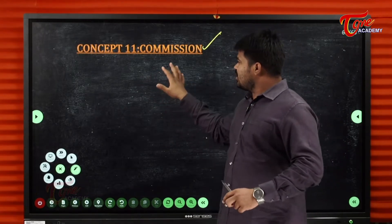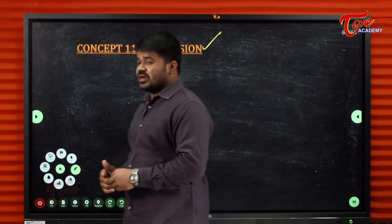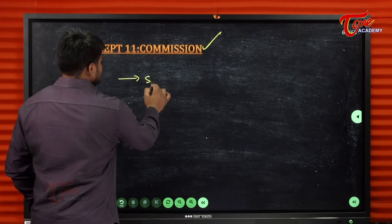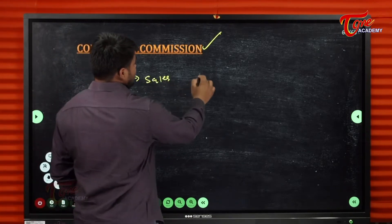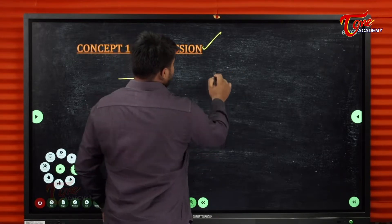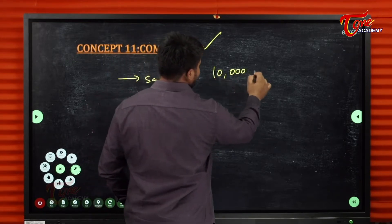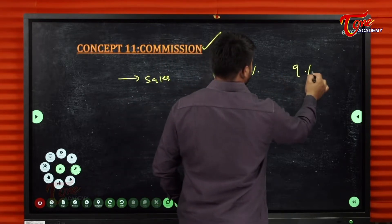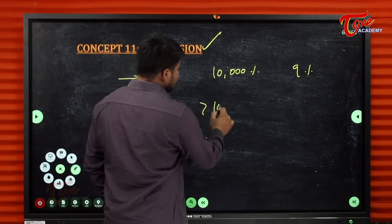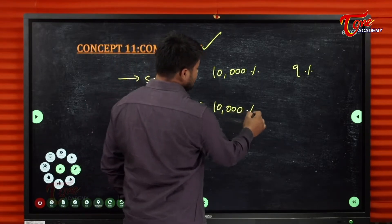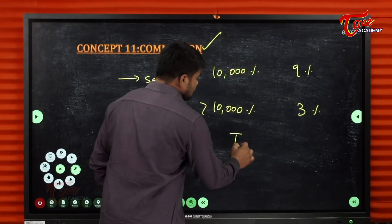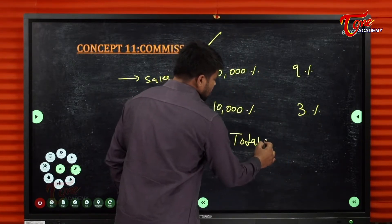For example, a salesman with 10,000 sales gets 9% commission, and above 10,000 he gets 3% commission. So we find the total sales and total commission.